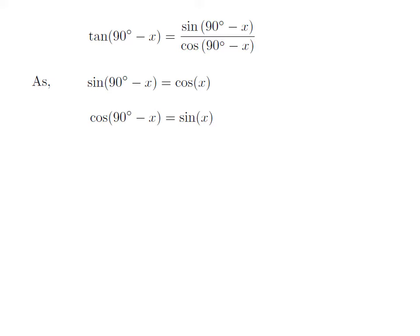As we know, the trigonometry identity cosine of 90 degree minus x is equal to sine of x. The proof of this trigonometry identity has been explained in the video appearing in the upper right corner. The URL of the video has also been mentioned in the description section.